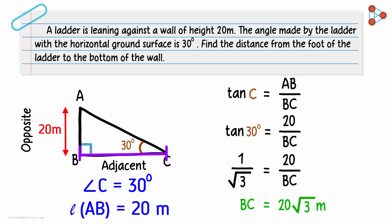So the distance between the foot of the ladder and the bottom of the wall is 20 root 3 meters. You would have gotten the same answer if you had used cot instead of tan as well. We will leave it as an assignment for you to verify that. In the next video, we will look at another example. See you there!